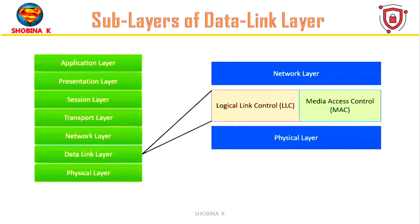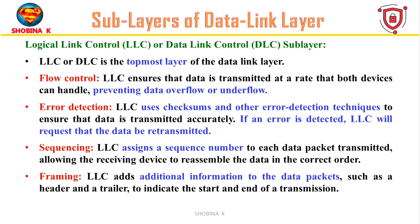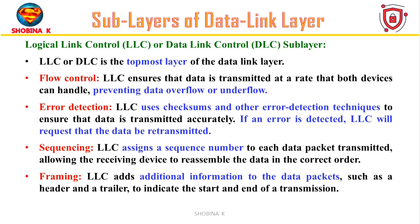Now let's understand the sublayers of the data link layer. The data link layer is divided into two sublayers: Logical Link Control (LLC) and Media Access Control (MAC). The LLC is the topmost sublayer and provides several functions including flow control, which regulates data flow between devices to prevent overflow or underflow. It also employs error detection techniques such as checksums to verify transmitted data accuracy — if an error is found, LLC requests retransmission. Additionally, each data packet transmitted by LLC is assigned a sequence number, allowing the receiver to reassemble packets in the correct order. LLC also adds header and trailer information to indicate the start and end of the transmission.